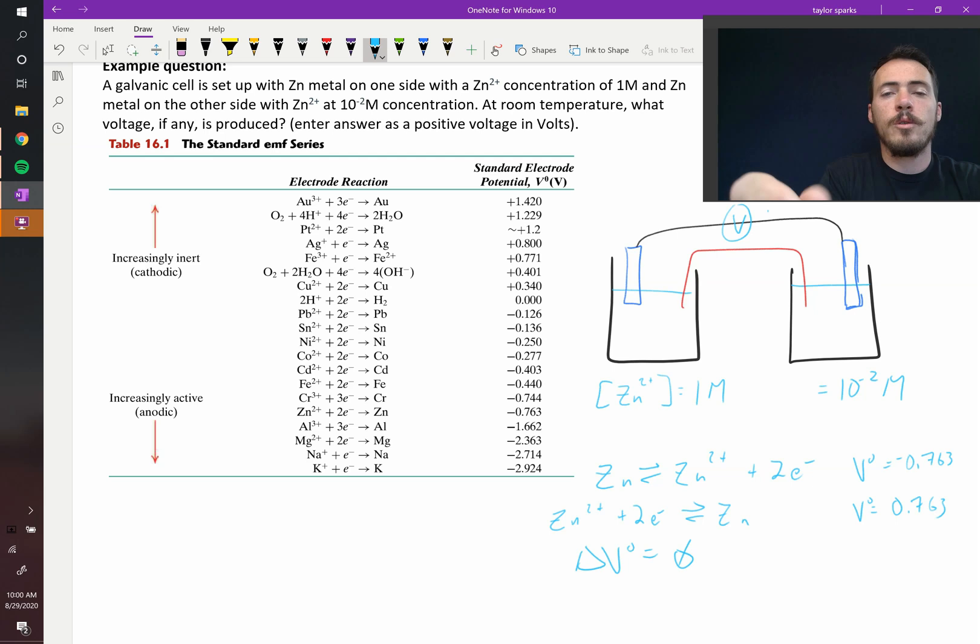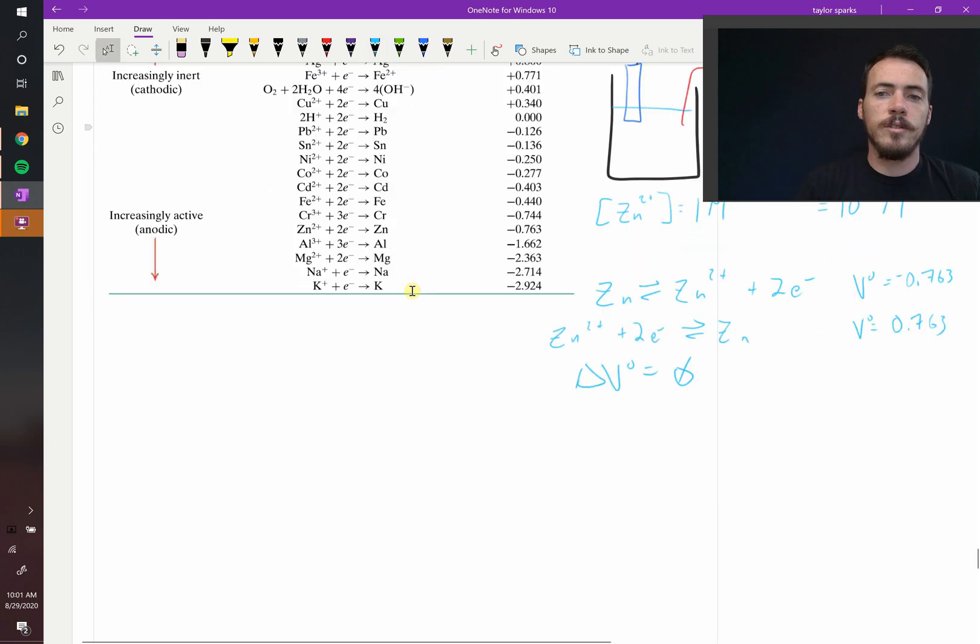So the question though is, it says, at room temperature, what voltage, if any, is produced? Remember, delta V naught is not the voltage that you read here. This guy right here is not equal to delta V naught, it's delta V. So what's our expression for delta V? Let's write that out.